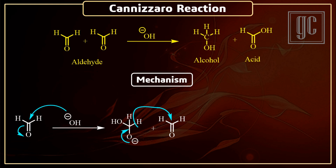The negative charge on oxygen is neutralized and a carboxylic acid is formed. Now the leaving hydride ion attacks on the carbonyl carbon of the other aldehyde, and as a result an alkoxide anion is formed. Then one proton shift takes place from the acid group to the negatively charged alkoxide.